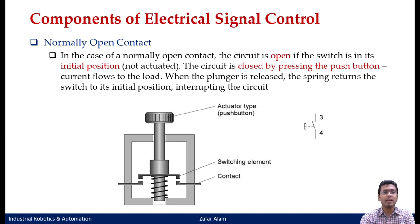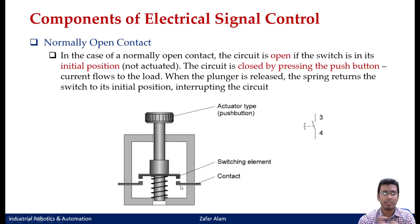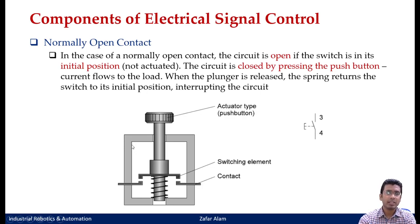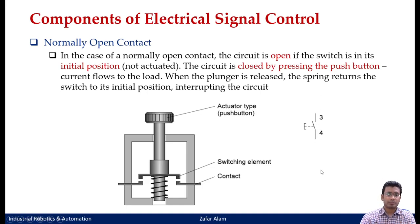Push buttons have only momentary applications — the switch is actuated only for a small amount of time, only as long as you keep the push button pressed, just like your bell switch. Whether using a push button switch or a control switch, both are either normally open contact type or normally closed contact type. In a normally open contact, the circuit is open if the switch is in its initial position. The moment you press it, the circuit gets engaged and current starts to flow.